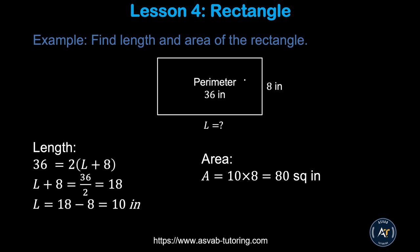In this next example, the perimeter is given as 36 inches and the width is given as 8. You have to find the length. Since opposite sides are the same, use the formula: 36 equals 2 times (l plus 8). Divide both sides by 2 to get 18, then subtract 8 to get a length of 10 inches. The area is 10 times 8, which is 80 square inches.